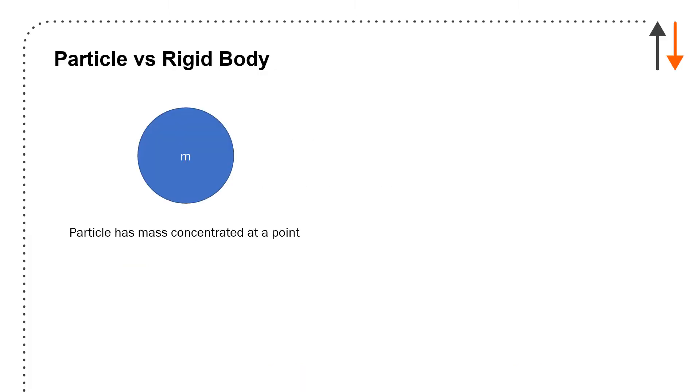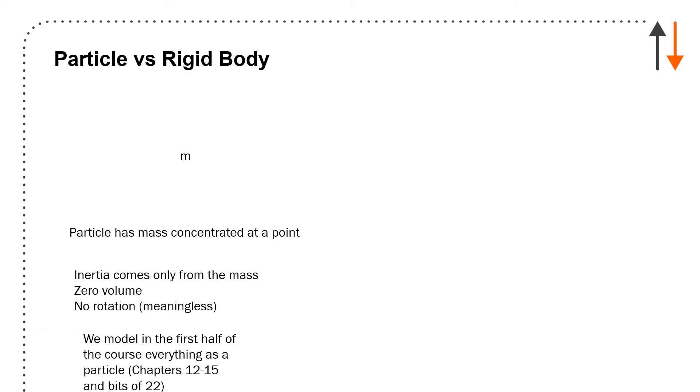So the first thing I want to do is define particles versus rigid bodies. Particles are something we already know. And typically when I draw it on a board, I'll draw a box or a circle and I'll put a mass in the center of it. But in reality, a mass or a particle is just a mass. There's no dimension to this. And all of it is concentrated at a point. And so the reality is that it's zero size with some value of mass, 10 kilograms, 20 kilograms, whatever it is. And it's all concentrated at that point. Inertia only comes from the mass. It's zero volume. And rotation is meaningless in this case. Because you can't have something without a dimension rotating because there's nothing to rotate about.